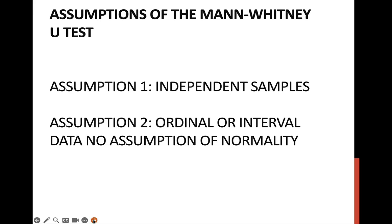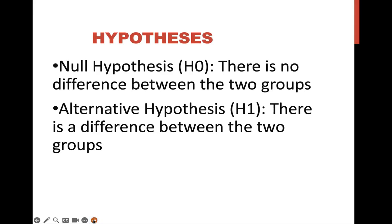Two assumptions here. One, independent samples, and two, ordinal or interval data, no assumptions of normality. Let's take a quick look at our hypotheses. The null: there is no difference between the two groups and the alternate: there is a difference between the two groups.